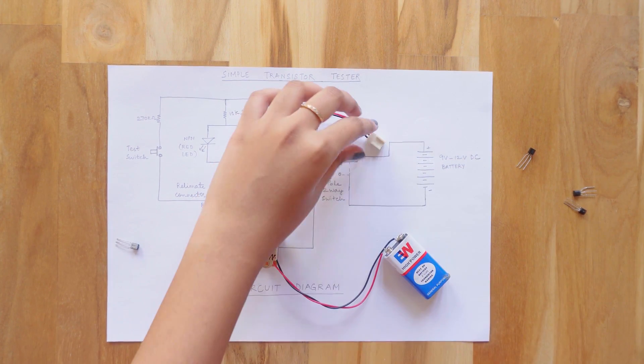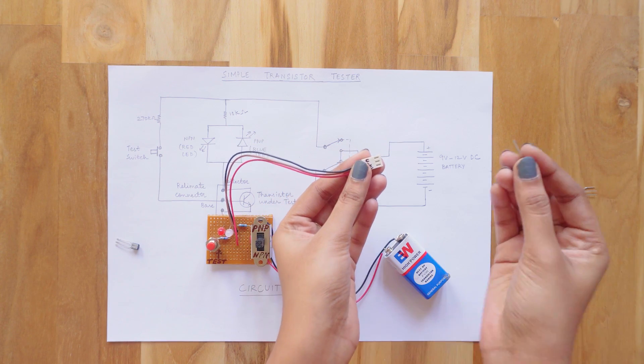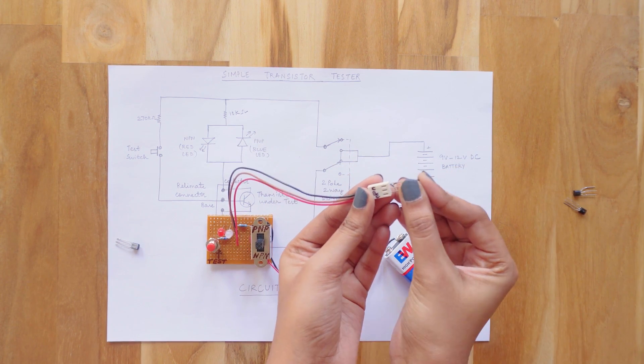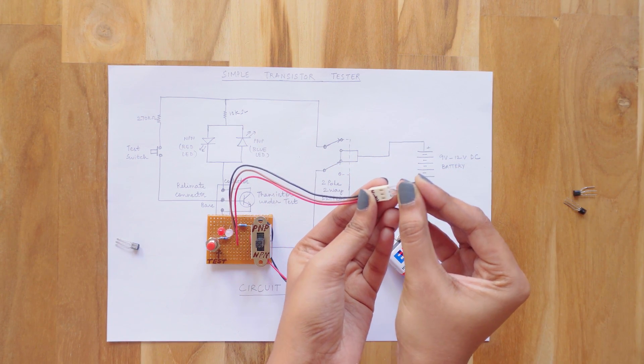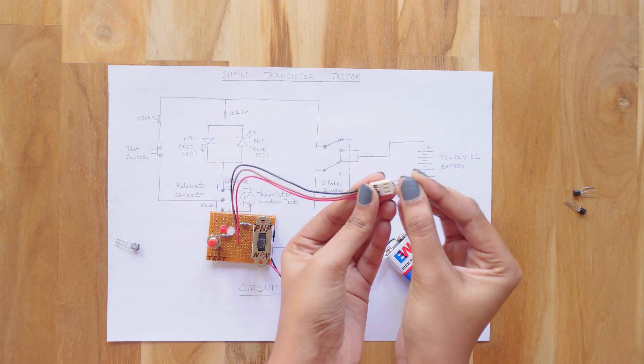Now let's check another transistor. Let me take this one and place it in the relimate connector. While placing, check the Collector, Base and Emitter of the transistor and insert it correctly.